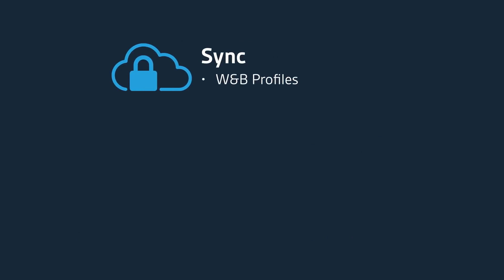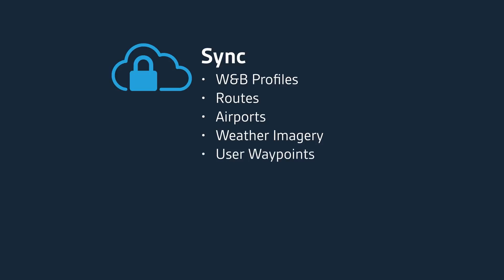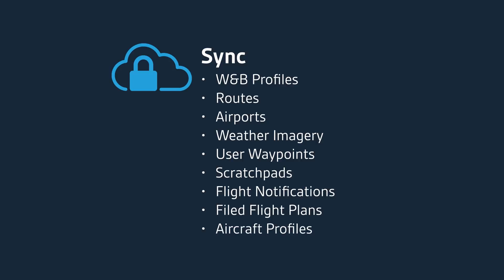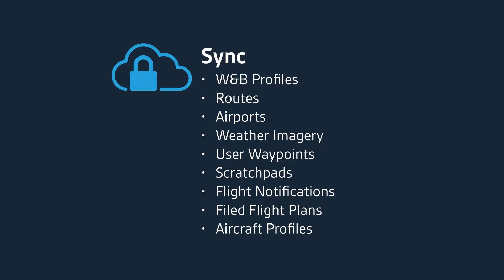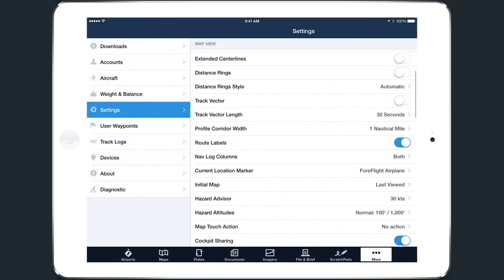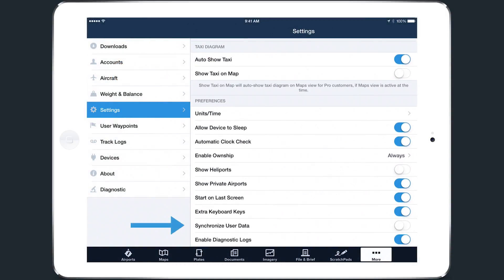In addition to Weight and Balance profiles, Sync also supports recent and favored routes, airports, and weather imagery, user waypoints, scratch pads, flight notifications, filed flight plans, and aircraft profiles. Although Weight and Balance profiles are a pro-only feature, data syncing is available to all ForeFlight subscribers. It can be enabled by turning on the Synchronize User Data setting, as shown before near the bottom of the settings page.